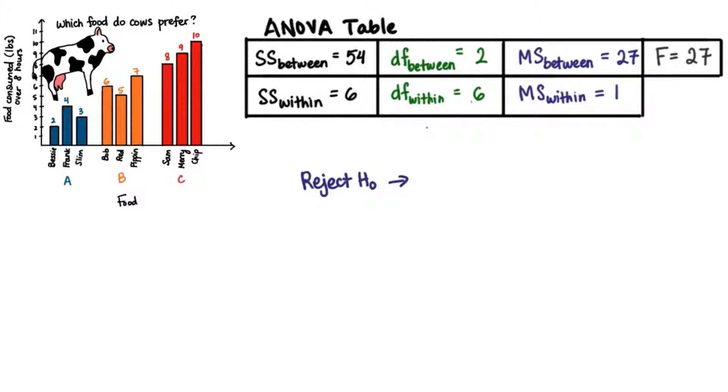By rejecting the null, we know that at least two of the foods differ in terms of mean amount consumed. But we don't know which ones differ. We can see that all three of the means differ from each other.